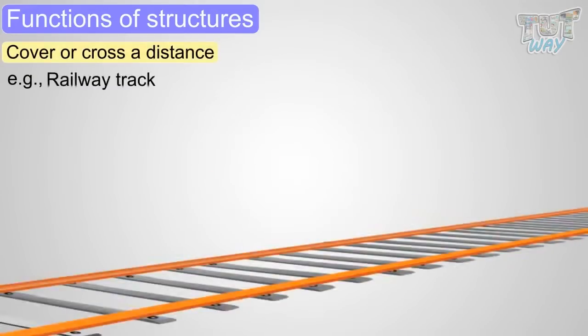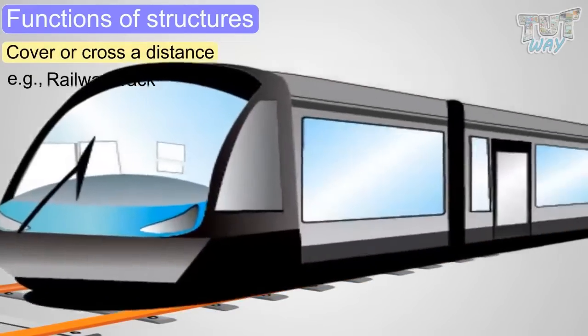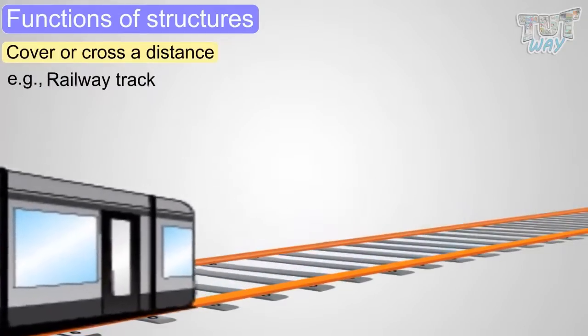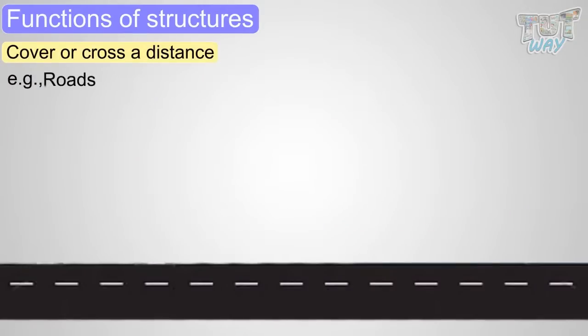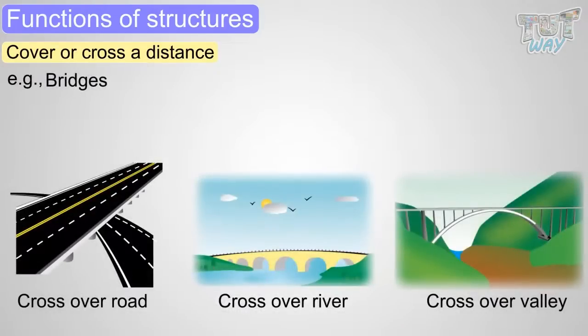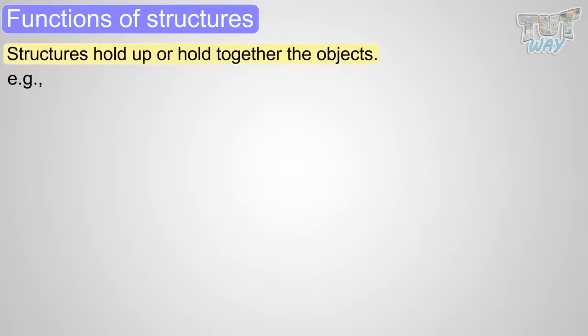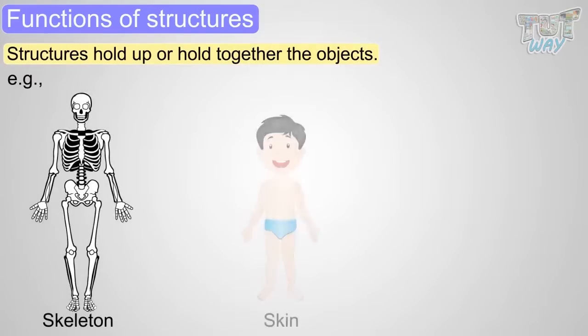Railway track is a structure that helps the train to move on it to cover distance. Roads are structures on which vehicles can move to cover the distance. Bridges are structures that help to cross over a river or a steep valley. So first, we learned that structures hold up or hold together the objects, like skeleton, skin, and hanger.